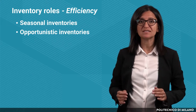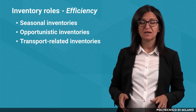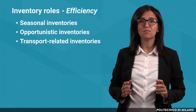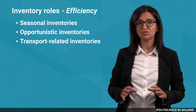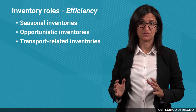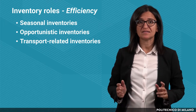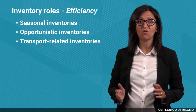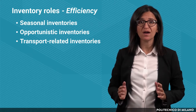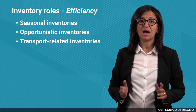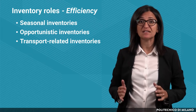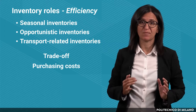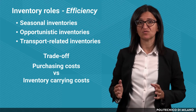Another example is given by transport-related inventories. If we consider road transport, full truckload shipments are more convenient, since they allow splitting the fixed cost of transport over a higher number of units. The same can be said when we consider more economic transport modes, like water or rail, which usually require higher quantities to be shipped. However, larger quantities lead to higher inventories. Therefore, the trade-off is between the transport costs, which are expected to decrease, and the inventory carrying costs.